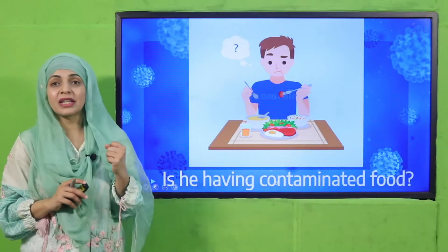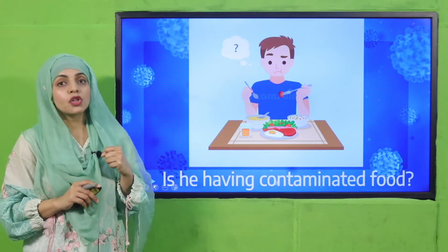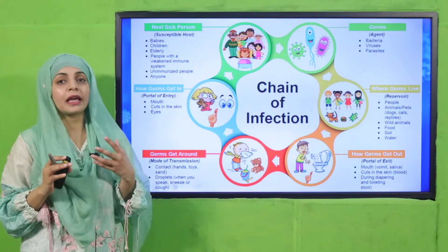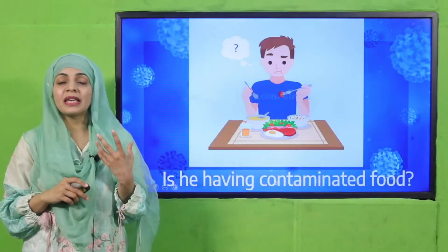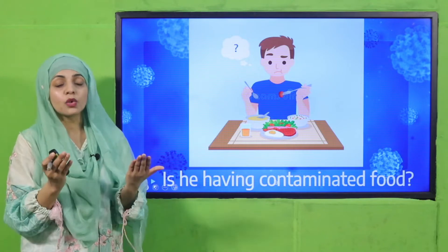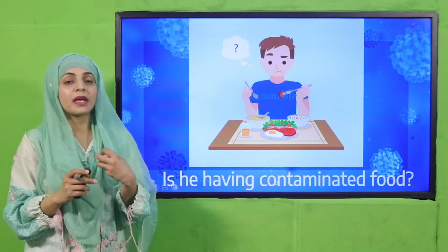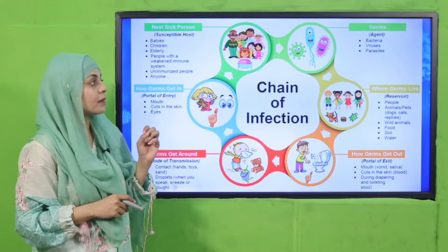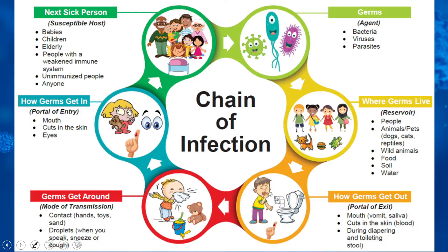Next, on your screen: is this man having contaminated food? If you buy food from vendors outside, junk food from outside is definitely contaminated by germs. Also, if you do not wash your hands before eating, germs can enter your body. Germs — bacteria, viruses, and different parasites — are the agents which cause diseases, and such agents are called pathogens. They enter our body through our hands, our mouth, and open wounds.